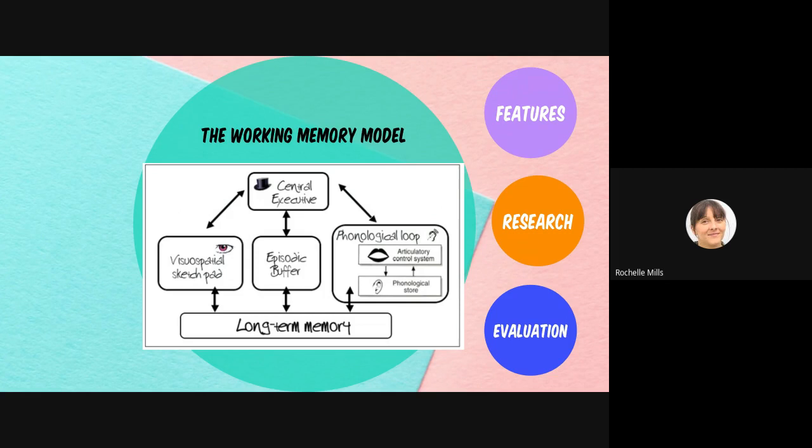Make sure that you talk about the features of each of the stores and the coding and the capacity of each of the stores alongside what they do, and the information that they process. You can't just draw this diagram down without elaborating on it to get full marks in a question. You need to make sure you elaborate by talking about the features of the working memory model and going into that in more detail.